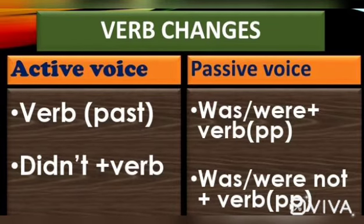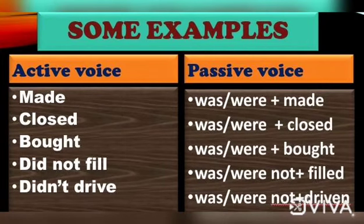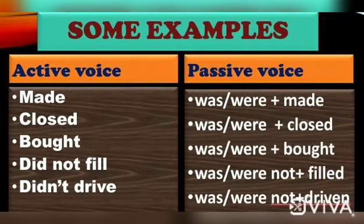The main verb is always in past participle form. Let us see some examples of verb changes. 'Made' becomes 'was/were made.' 'Closed' becomes 'was/were closed.' 'Bought' becomes 'was/were bought.' 'Did not fill' becomes 'was/were not filled.'